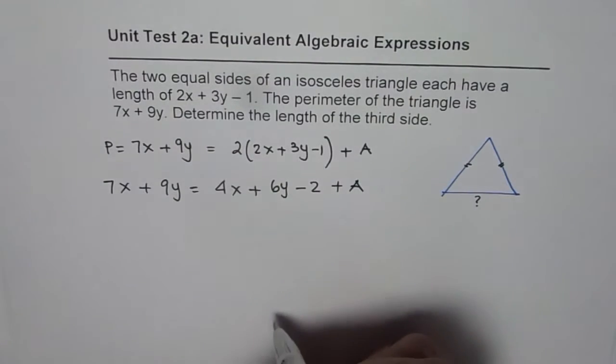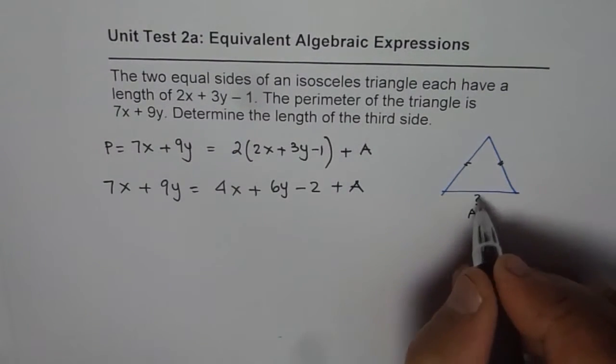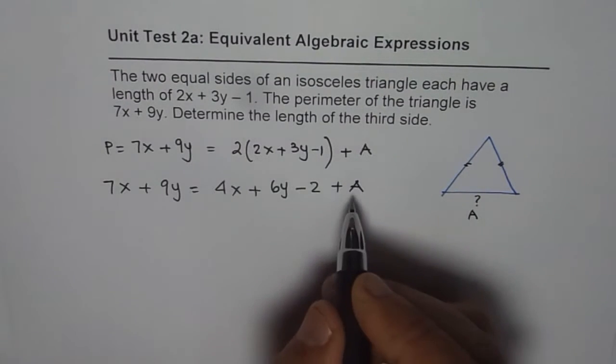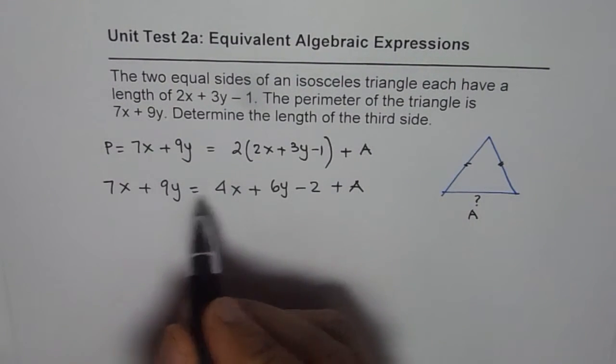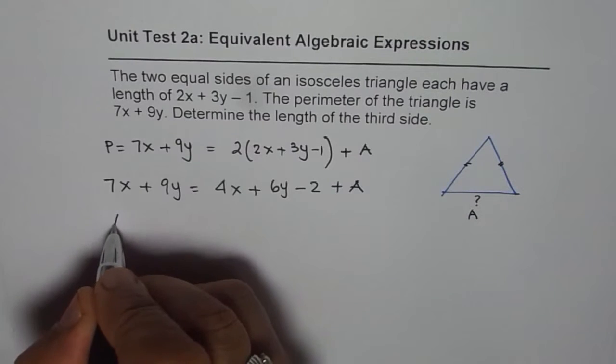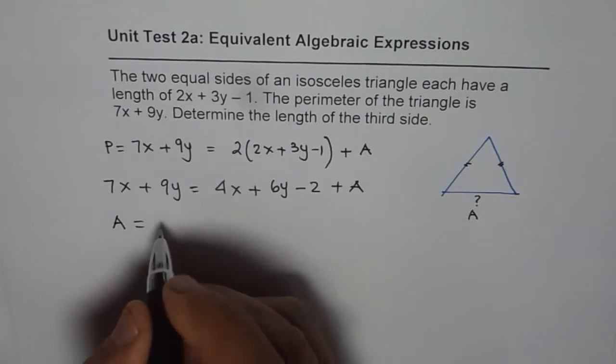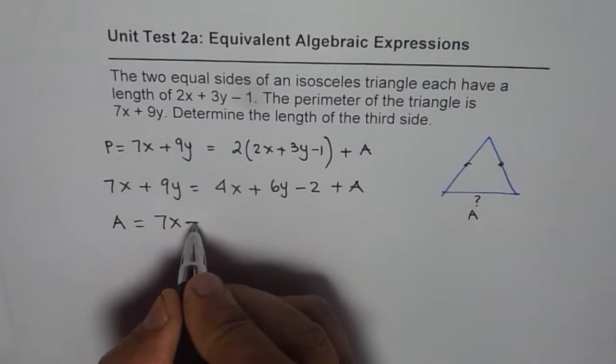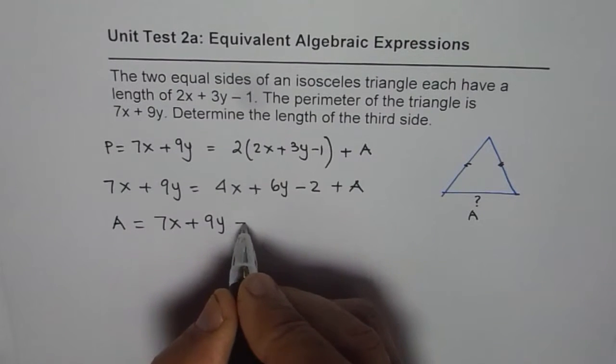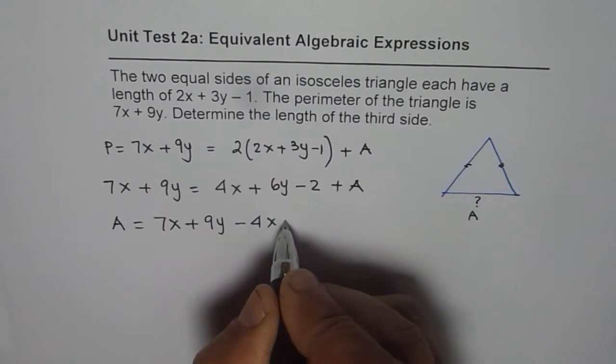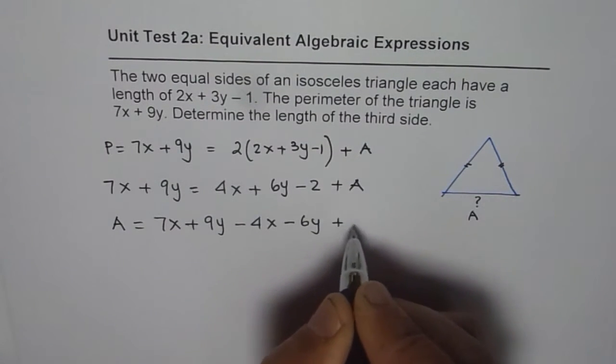What is A equal to? The third side. So we can bring all these terms to one side and find the value of A. So A is equal to 7x + 9y - 4x - 6y + 2.